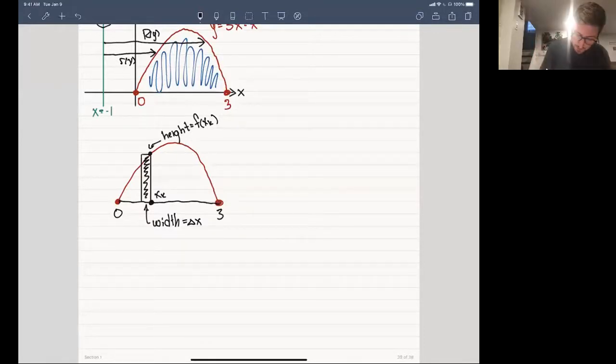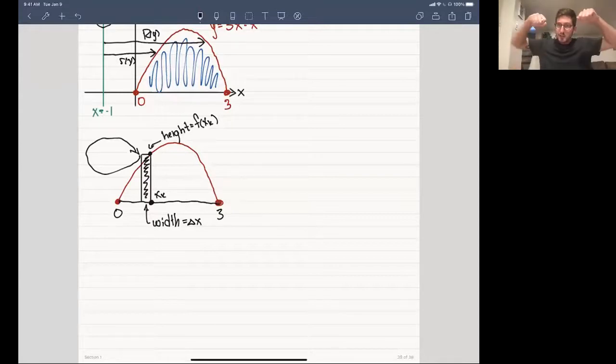So instead of taking these horizontal cross sections and finding the area of those things, you have these little cylinders. So you can imagine pulling each one of these rectangles around to generate out a full cylinder. And so you can imagine this, if you're looking at this sort of cake object from the top down, you're almost taking a cookie cutter and just pressing it in.